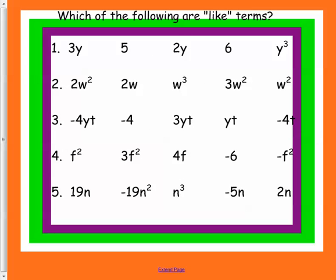Let's try these. Which of the following are like terms? In this one, the 3y and the 2y both have a y with no exponent. 5 and 6 are like terms because they don't have exponents or variables. y cubed is all by himself.